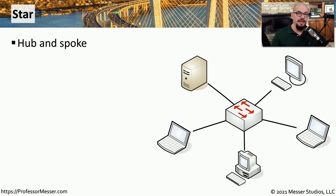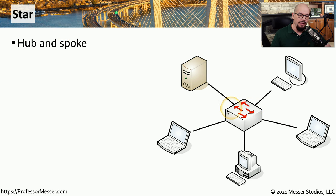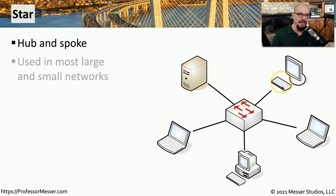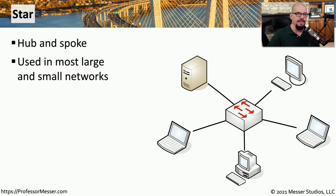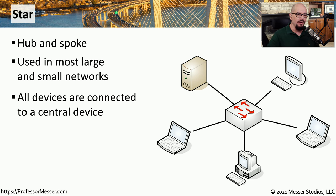One of the most popular types of topologies is the star topology. You might also hear this referred to as a hub and spoke, where the hub is in the middle and the spokes are along the outside. This is a topology that you'll find on almost any network, regardless of the size of the network. And you'll also find that most devices are connecting back to the central hub of the star.